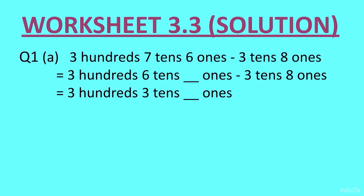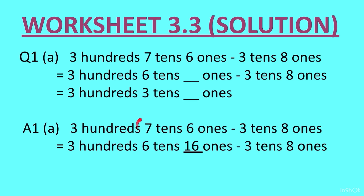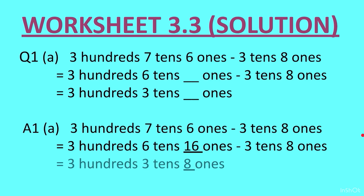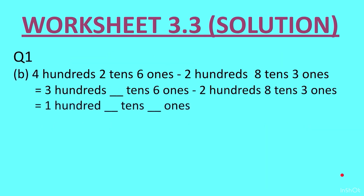Now this was our first question. The 7 becomes 6, and 1 ten is removed and goes to the ones column. We already have 6 there, so this becomes 16. From 16 ones, you can subtract 8 ones — 16 minus 8 is 8. Then from 6 tens, subtract 3: 6 minus 3 is 3 tens, and 3 hundreds is already given to us.